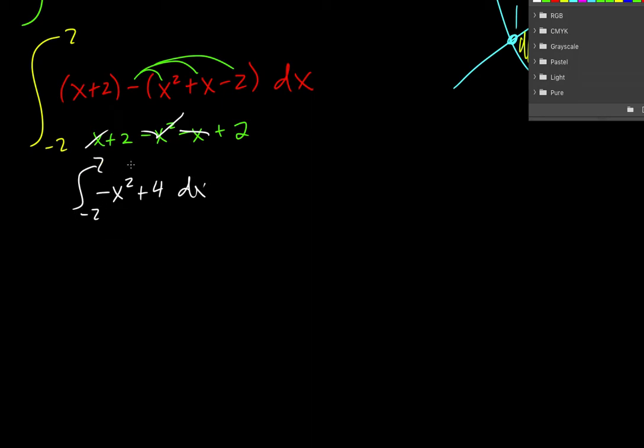Now I'm going to integrate this. It's just a polynomial, so it should be pretty easy. So x to the third... And then 4x. And I'm going to evaluate that from negative 2 to 2.